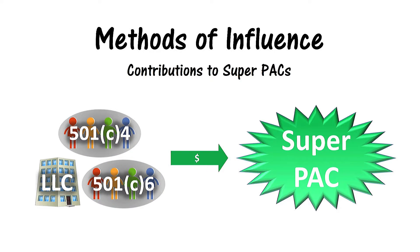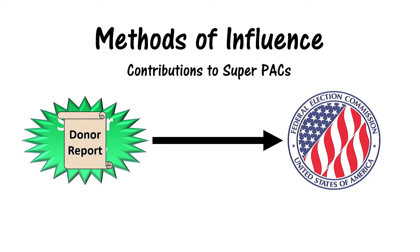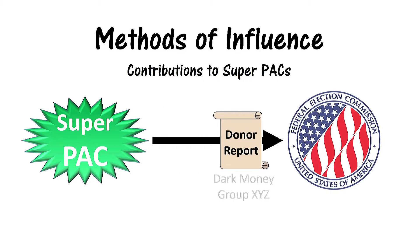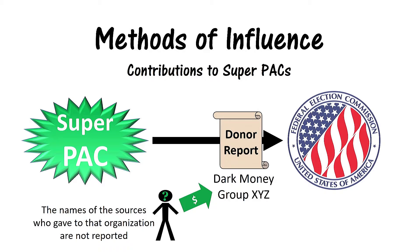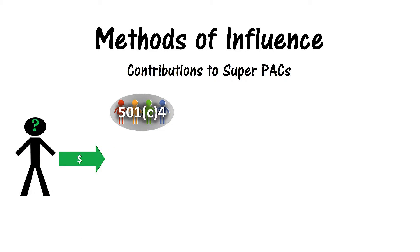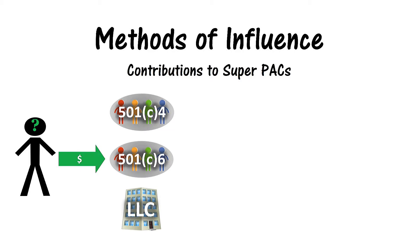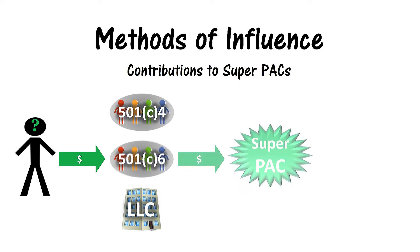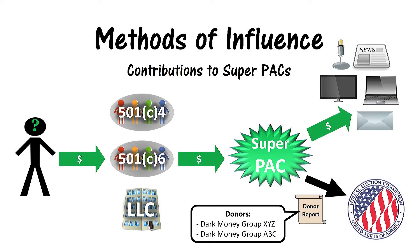Second, dark money groups can influence elections by making contributions to super PACs. Although a super PAC must report its donors to the FEC, a donating organization's name is reported — not the names of the sources who gave to that organization. Therefore, some 501(c)(4)s, 501(c)(6)s, and LLCs are created simply to act as a conduit for passing money from an individual or organization to established political organizations like super PACs, so that the source behind the money remains anonymous.